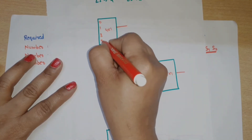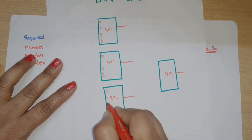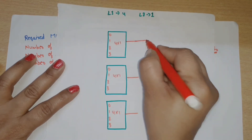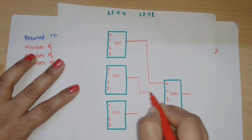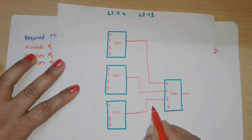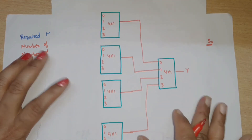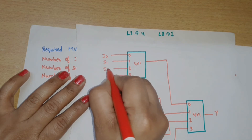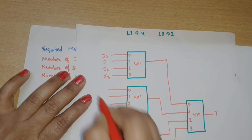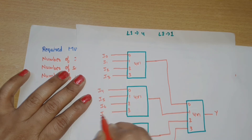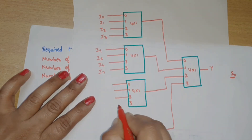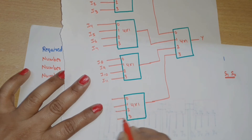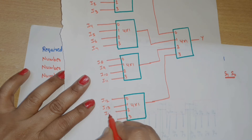Now we assign the inputs. For the first mux at Label 1, the inputs are I0, I1, I2, I3. For the second mux, the inputs are I4, I5, I6, I7. For the third mux, the inputs are I8, I9, I10, I11. For the fourth mux, the inputs are I12, I13, I14, I15. This gives us all 16 inputs with one output — done.